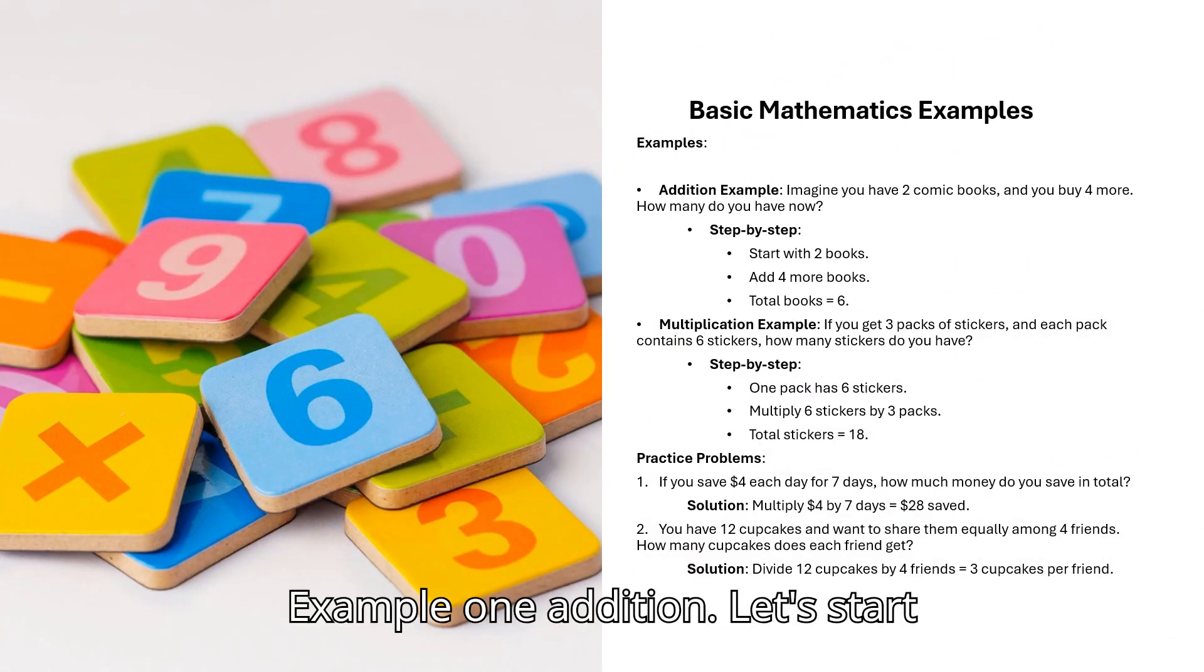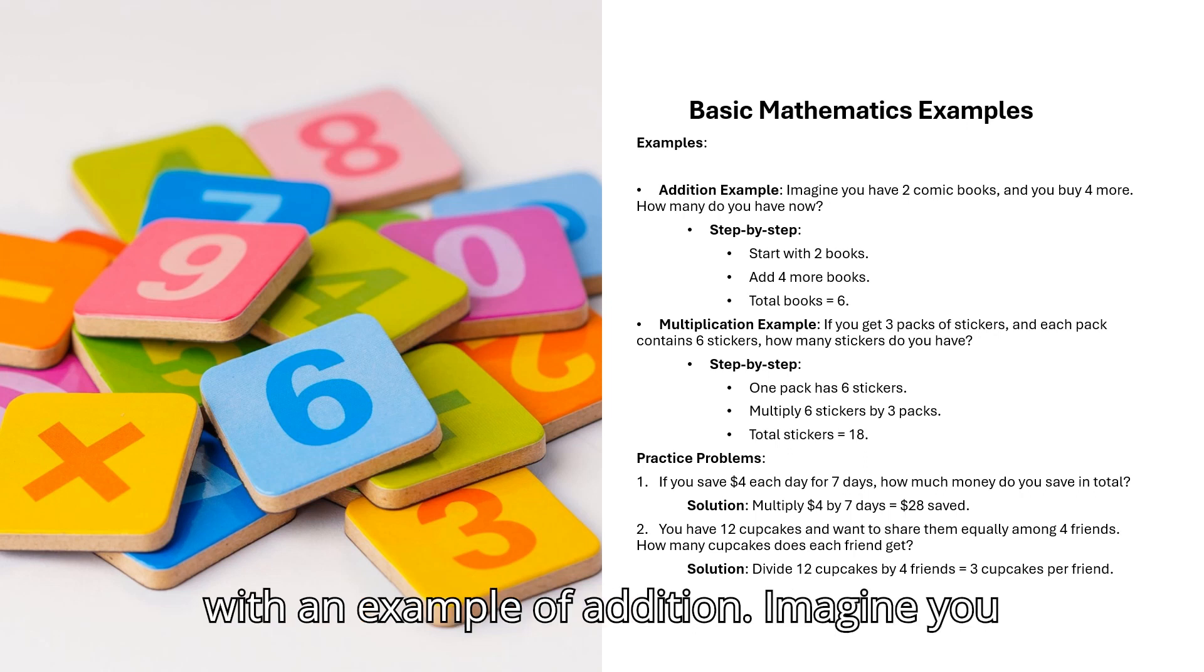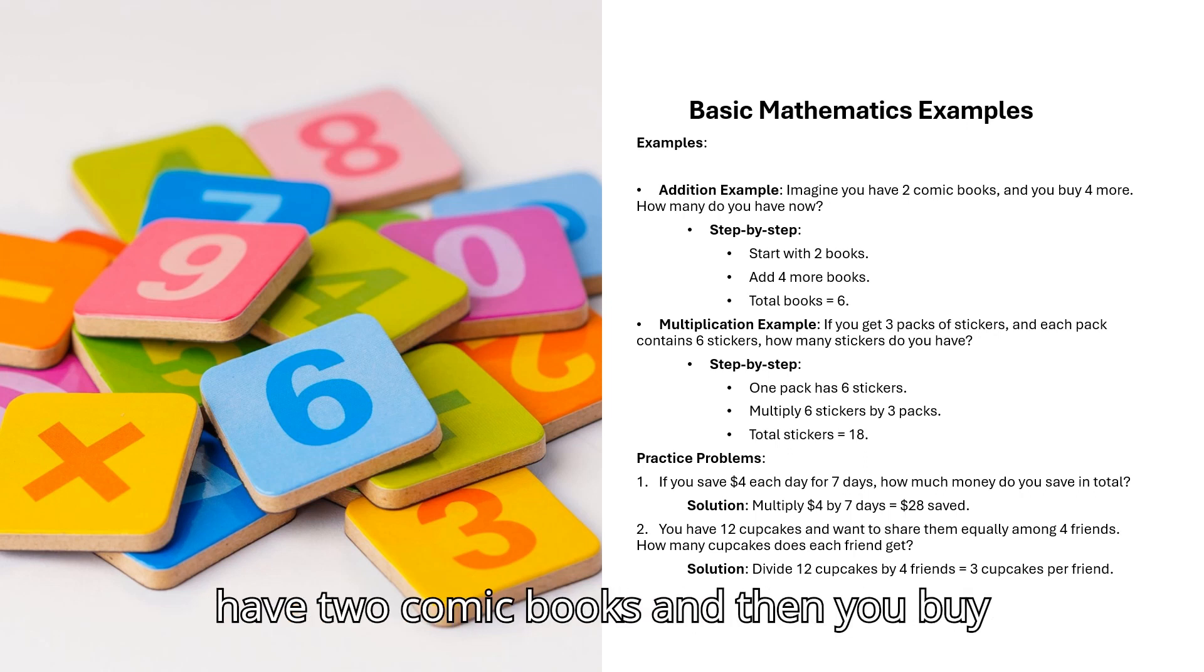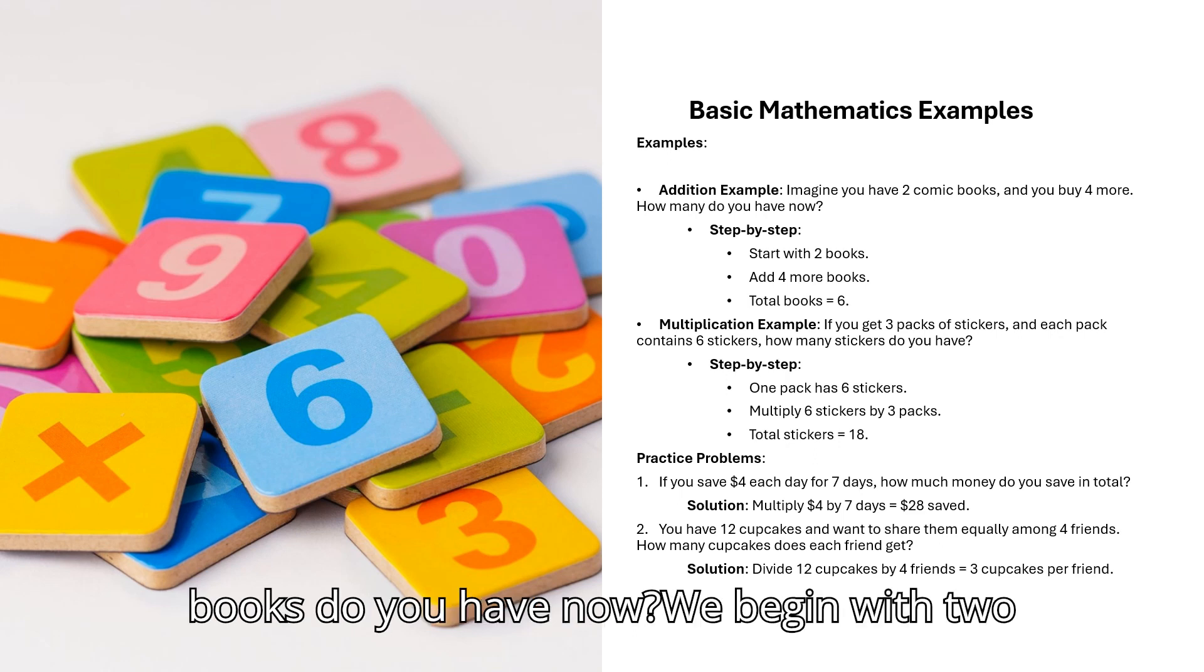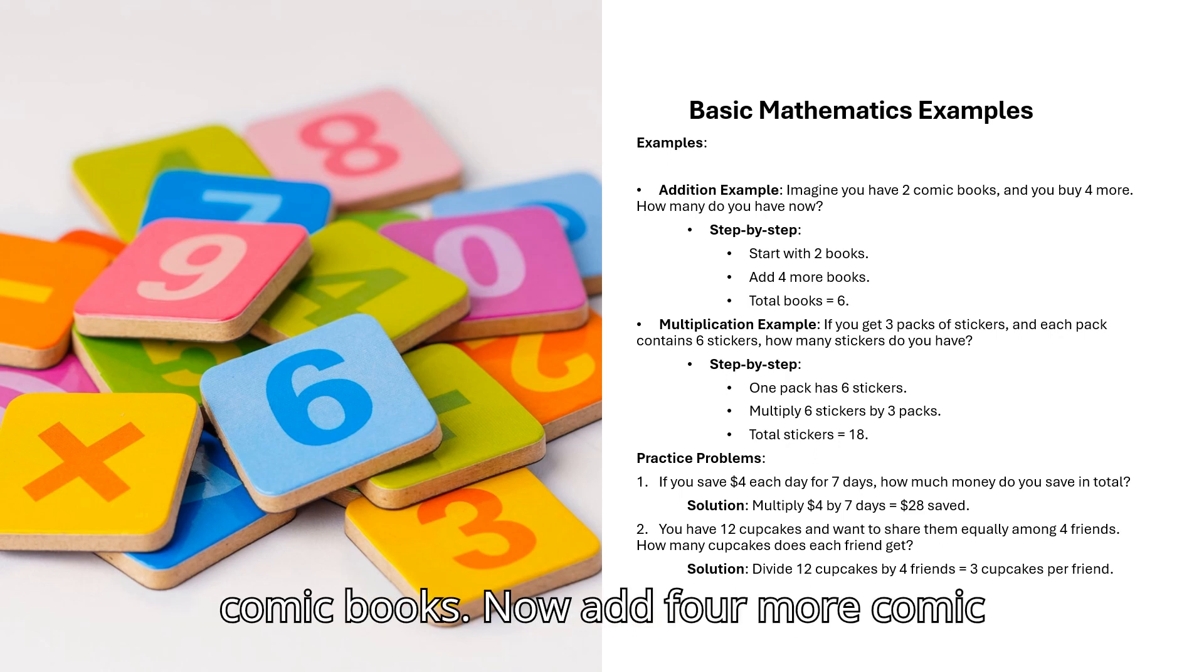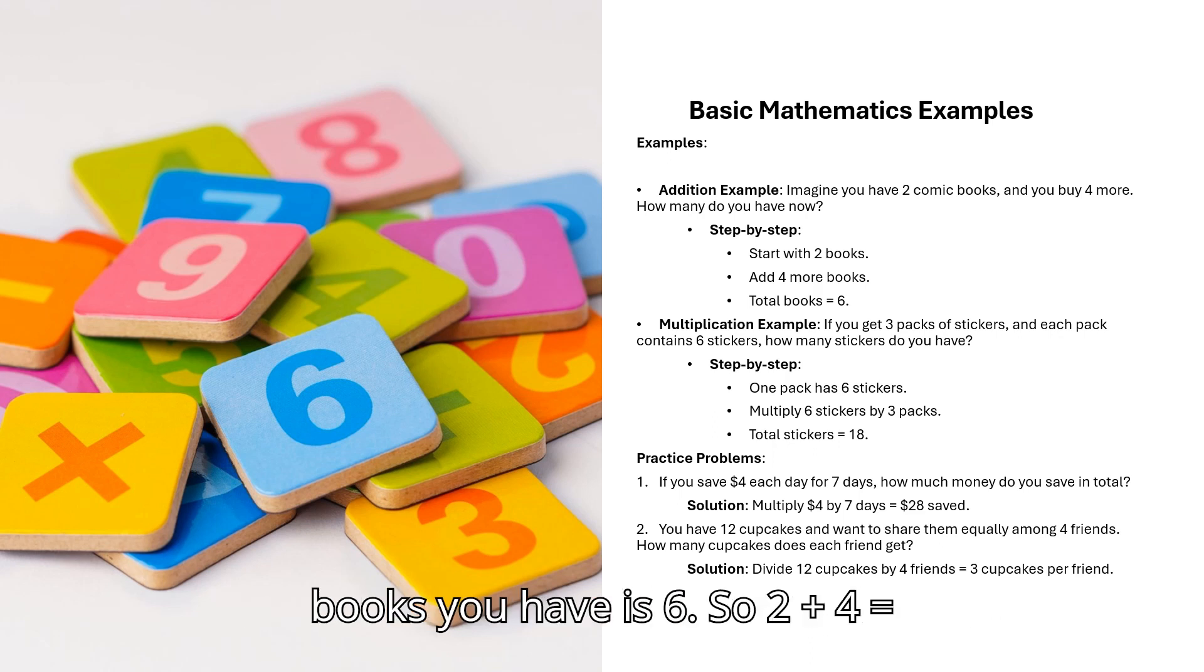Example 1: Addition. Let's start with an example of addition. Imagine you have 2 comic books, and then you buy 4 more comic books. How many comic books do you have now? We begin with 2 comic books. Now, add 4 more comic books to this. The total number of comic books you have is 6. So, 2 plus 4 equals 6.